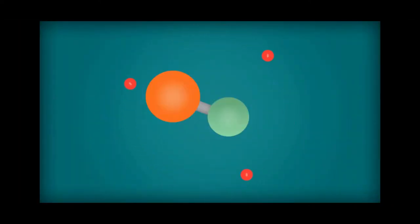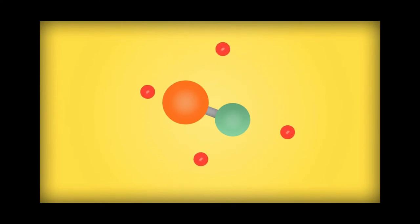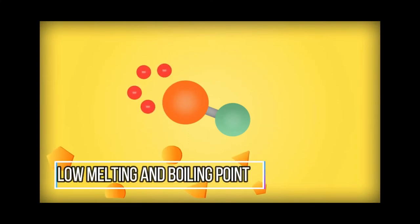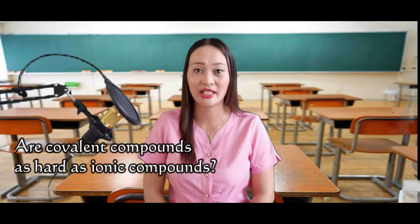Now let's move on to the properties of covalent compounds. The covalent bonds between atoms are quite strong, but the intermolecular forces and the attraction between molecules are relatively weak. The addition of a small amount of energy separates these molecules easily. Therefore, they have low melting and boiling points.